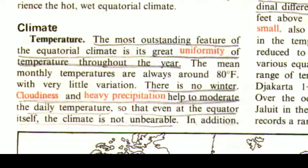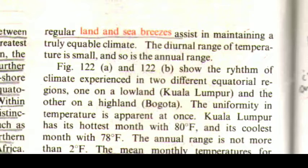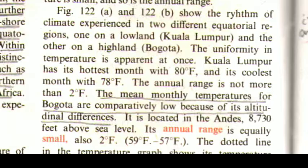The most outstanding feature of the equatorial climate is its great uniformity of temperature throughout the year. The mean monthly temperatures are always around 80 degrees Fahrenheit with very little variation. There is no winter; cloudiness and heavy precipitation help to moderate the daily temperature so that even at the equator itself the climate is not unbearable. Regular land and sea breezes assist in maintaining a truly equable climate. The diurnal range of temperature is small and so is the annual range. Figures 12.2a and 12.2b show the rhythm of climate experienced in two different equatorial regions — one on a lowland, Kuala Lumpur, and other on a highland, Bogota.